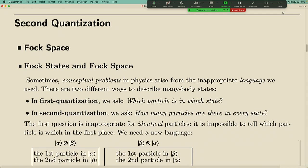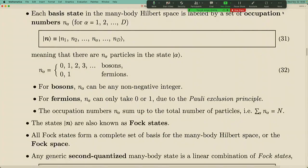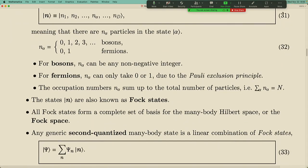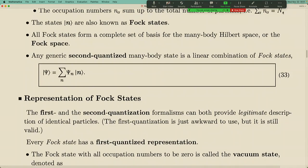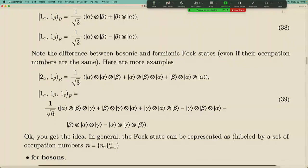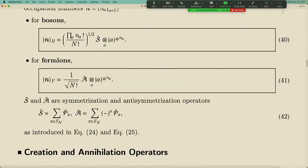Our goal was to define quantum many-body systems where the system is made of identical particles. In that situation we use the occupation number to label the independent states. For these states there are two possibilities: either they are made of bosons, for which the occupation number goes all the way to infinity, or made of fermions, for which it can only be zero or one.